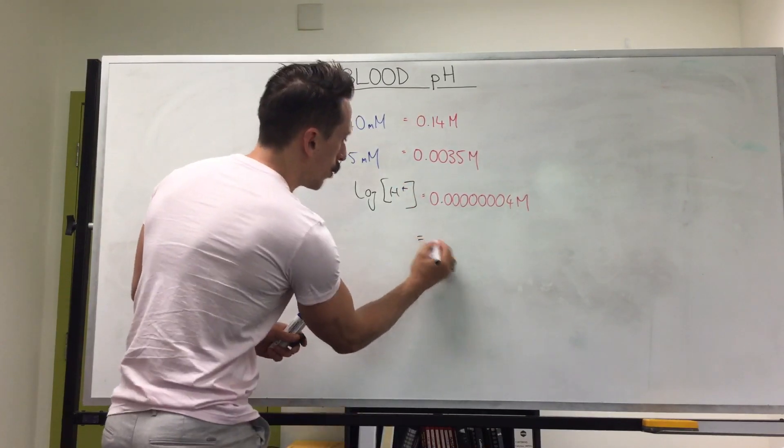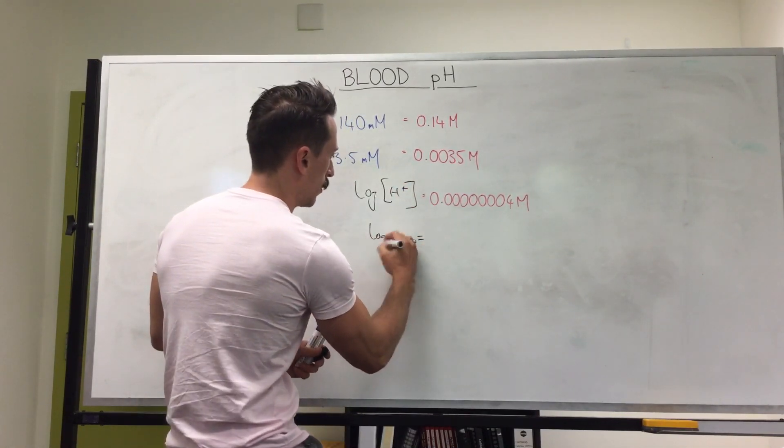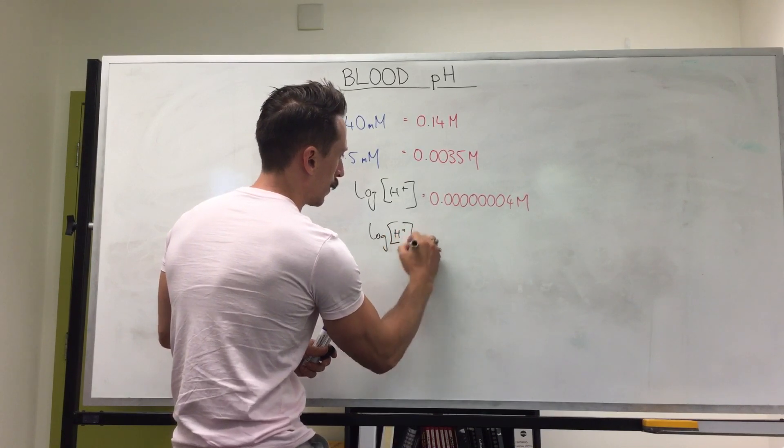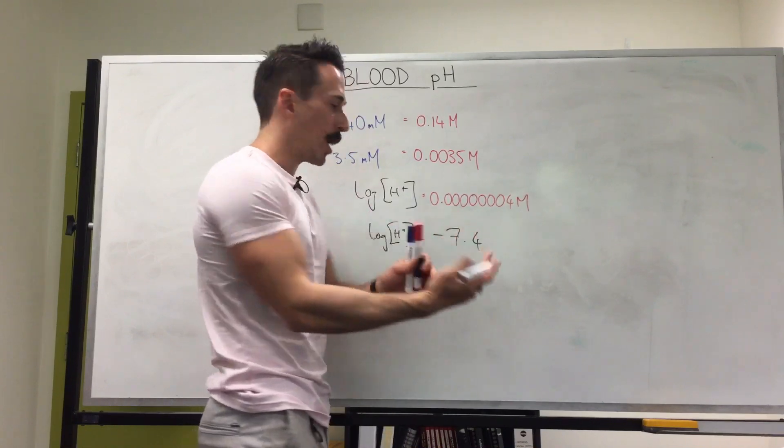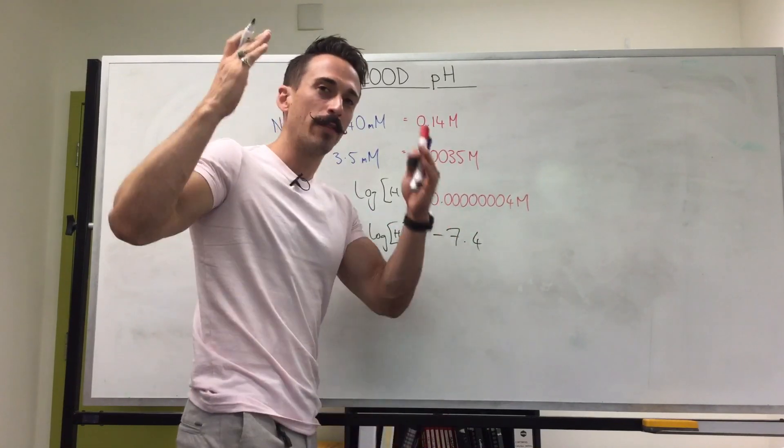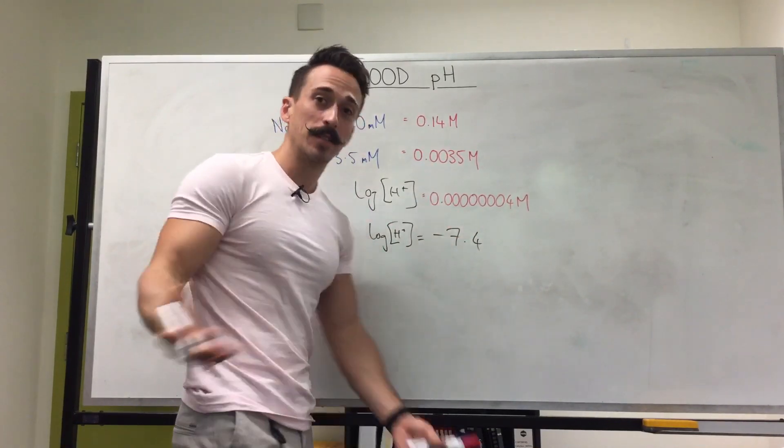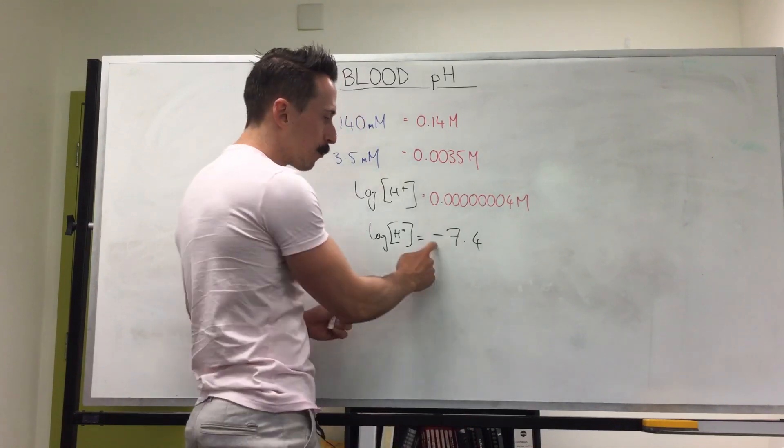what you end up getting as a readout would be negative 7.4. Now you do not want to write down on a chart negative 7.4. You don't want to write out for a concentration negative because it's an imaginary number. So you need to get rid of that negative.